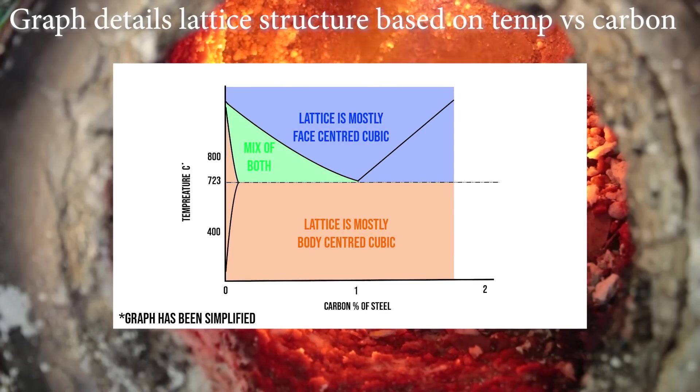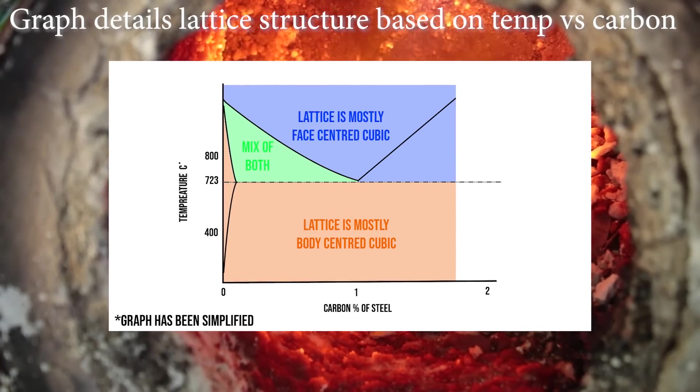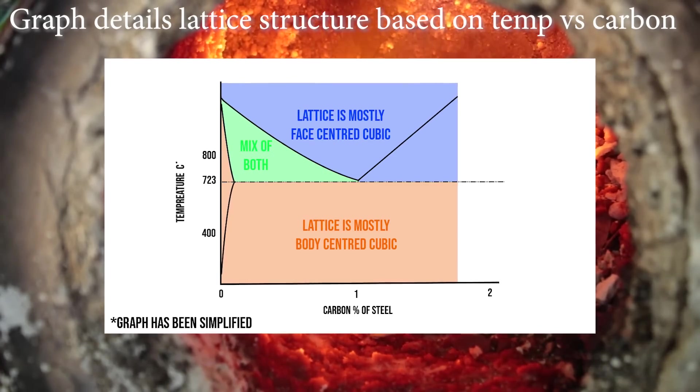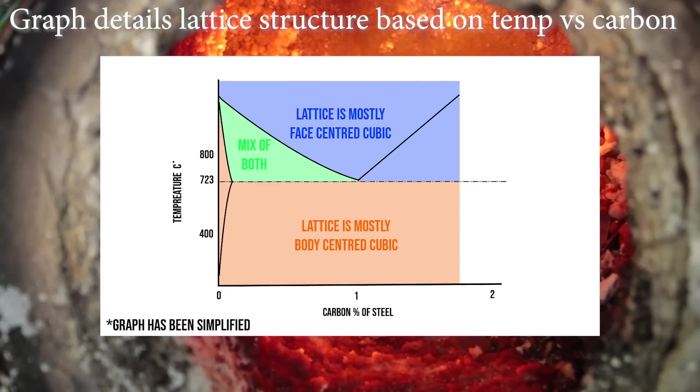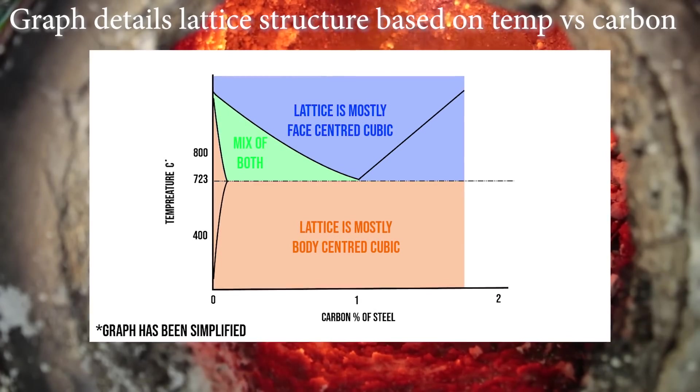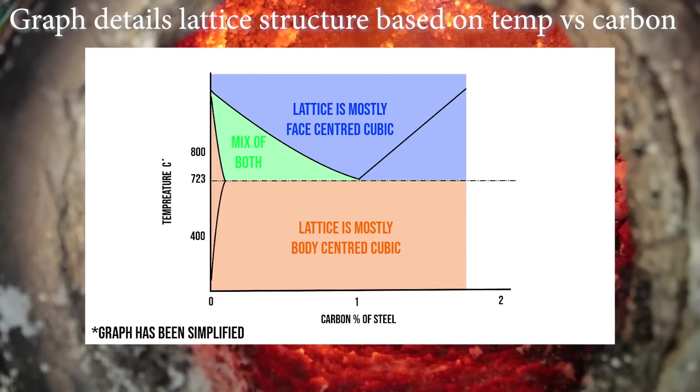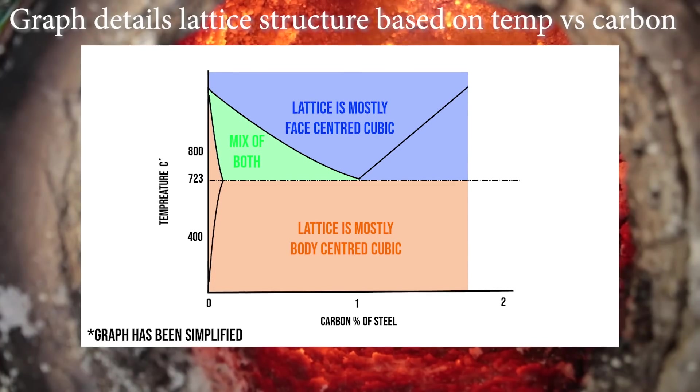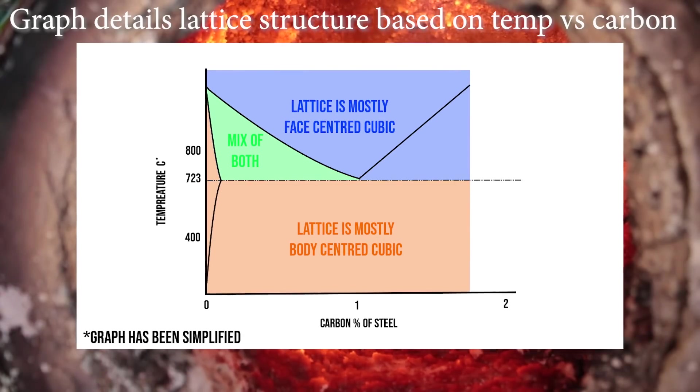However at over 730 degrees something else starts to happen. The internal microstructure of the steel, the atoms themselves, start to rearrange. The exact point that this occurs will depend on the amount of carbon, but at some point the ferrite and the perlite will transform into something called austenite.